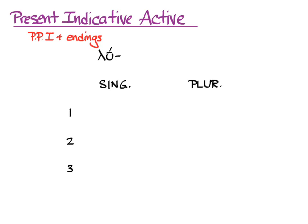And here are the endings. The third plural can also have a nu on the end. We call that a nu movable. Nu movables work the way that our indefinite article works.